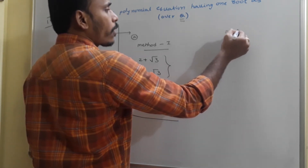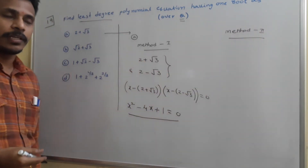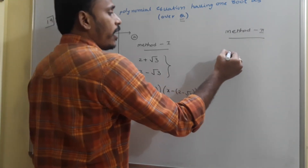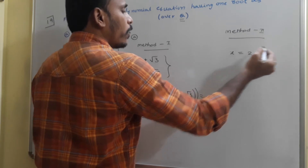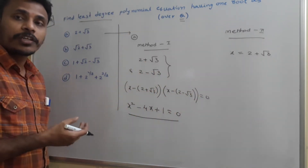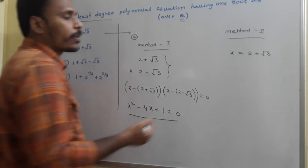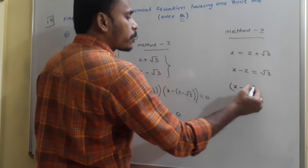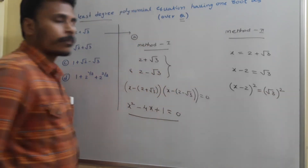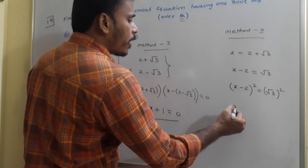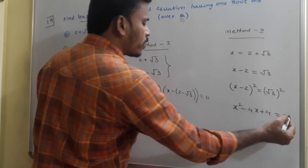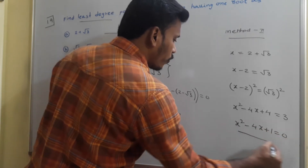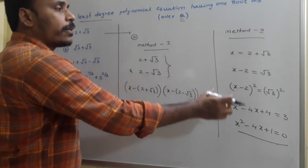Method 2 is applicable for all problems and is also somewhat easy. One root is 2 plus root 3, so take x equals 2 plus root 3. Since x is a root, it must satisfy the equation. Then x minus 2 equals root 3. Squaring both sides: (x minus 2) squared equals 3. Expanding: x squared minus 4x plus 4 equals 3, so x squared minus 4x plus 1 equals 0. This is Method 2.